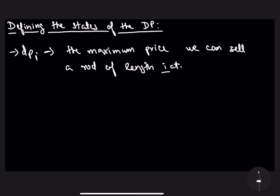From this definition, it is evident that in the case of a rod of length N, the answer we are looking for is DP[N]. This is a very straightforward definition of the states of the DP. Now let us try to understand the recurrence relation for this definition of the state.